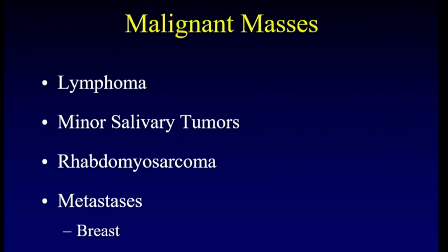Now let's turn to malignant masses. The most common malignancy to arise in the orbit is lymphoma, but we also encounter minor salivary tumors, particularly arising from the lacrimal gland, which is a modified salivary gland — all of the diseases we discussed regarding salivary glands can arise within the lacrimal gland. You can also get rhabdomyosarcomas arising within the orbit, and metastases of any sort can affect the orbit, but breast cancer is famous for it and has a very particular radiologic appearance.